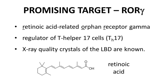There is a promising target for autoimmune disorders: ROR gamma, which stands for retinoic acid-related orphan receptor gamma. This receptor regulates T helper 17 cells, which are implicated in autoimmune disorders. Fortunately, there are x-ray structures of ROR gamma, or at least the ligand-binding domain of the receptor, as well as co-crystals of receptor-ligand complexes.